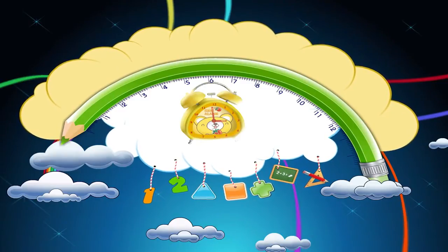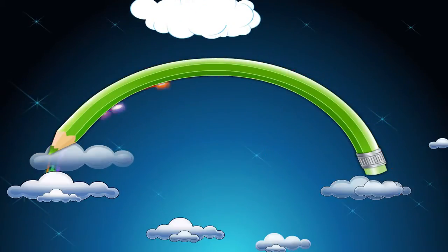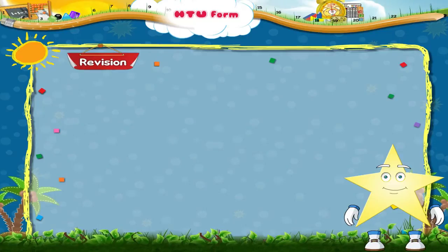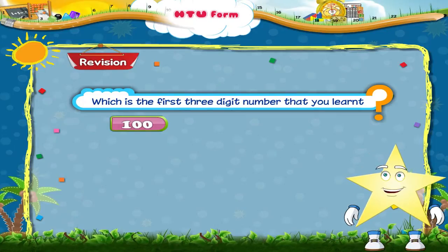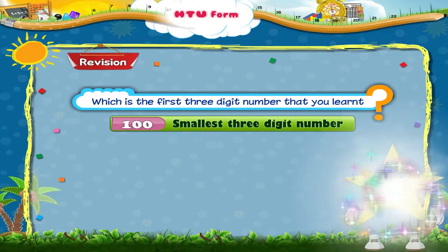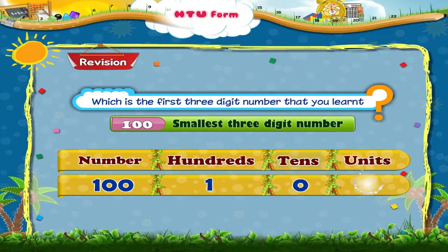Writing three-digit numbers in H-T-U form. Hey Starry! Do you remember which is the first three-digit number that you learnt? Right! It is indeed one hundred. One hundred is the smallest three-digit number. Now look at the number carefully. It has a units place, a tens place and a hundreds place. It has one hundreds, zero tens and zero units.